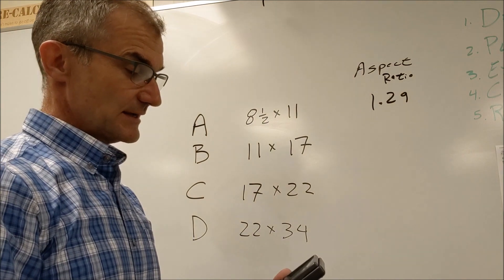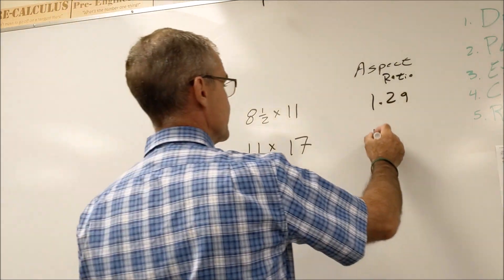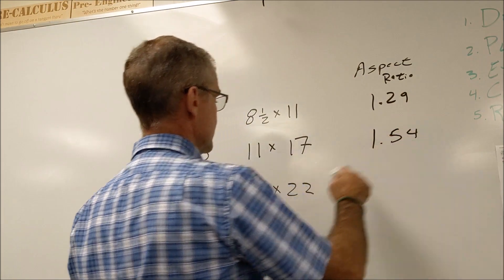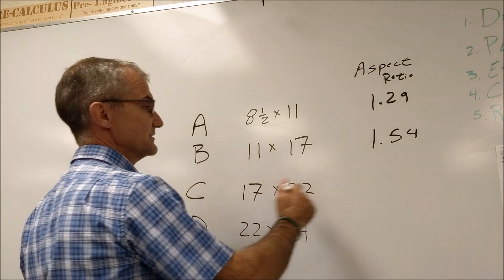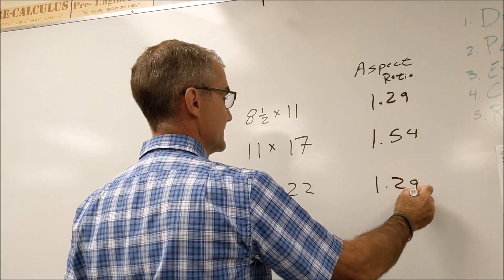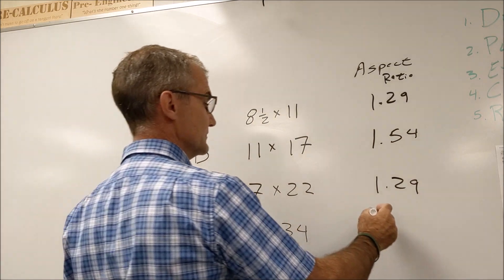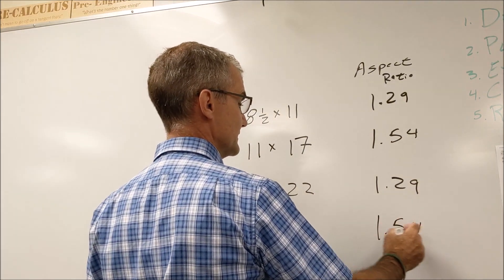Seventeen divided by eleven, you get one point five four. Twenty-two divided by seventeen, one point two nine. Thirty-four divided by twenty-two, one point five four.